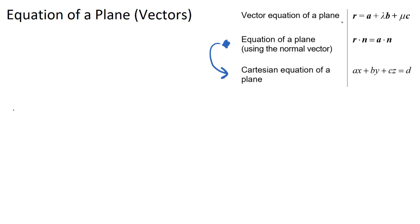The vector equation of a plane is very similar to the vector equation of a line. The vector equation of a line was r = a + tb, where r is any position vector on the line, a is a known fixed position vector on the line, t is the parameter, and b is the direction vector.